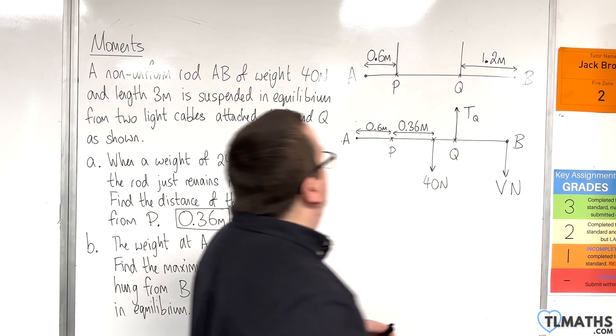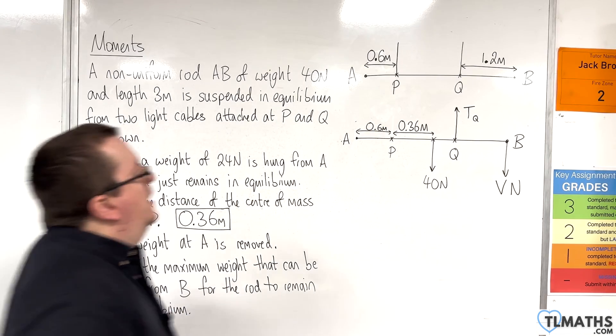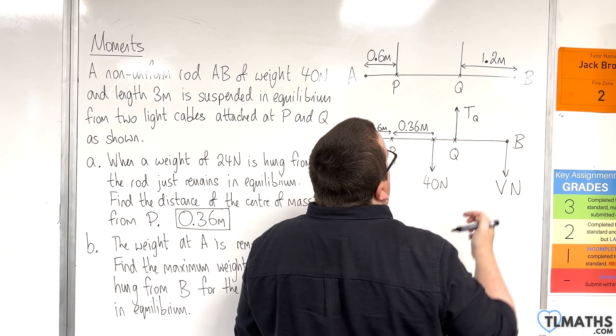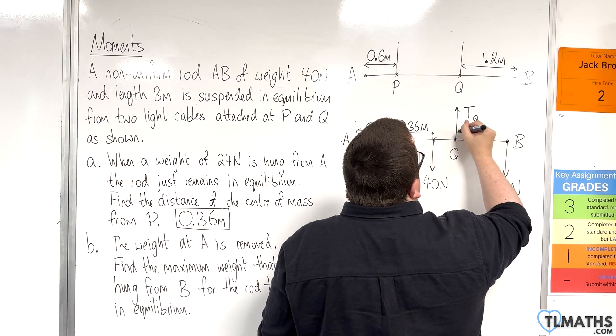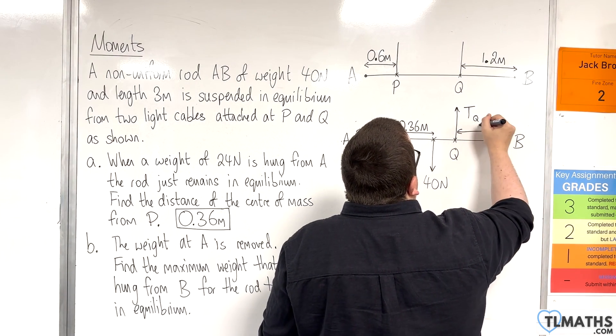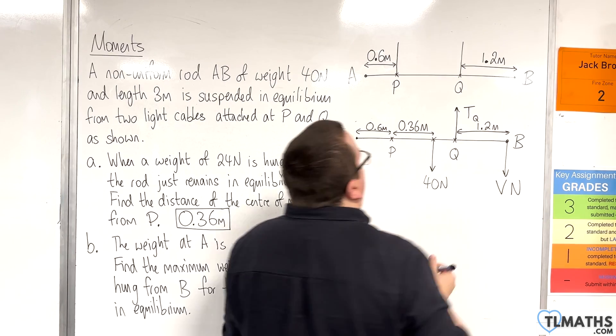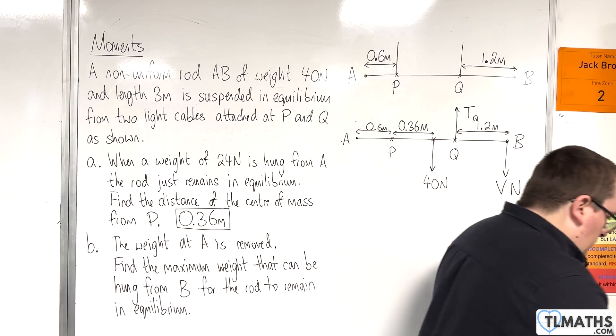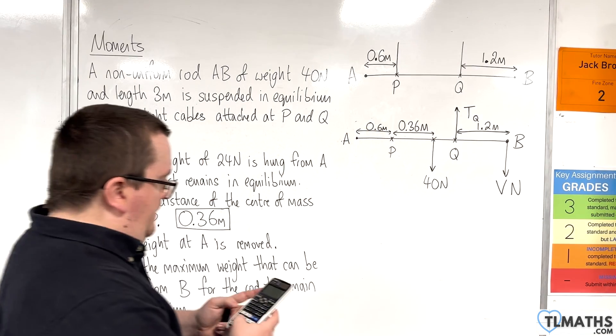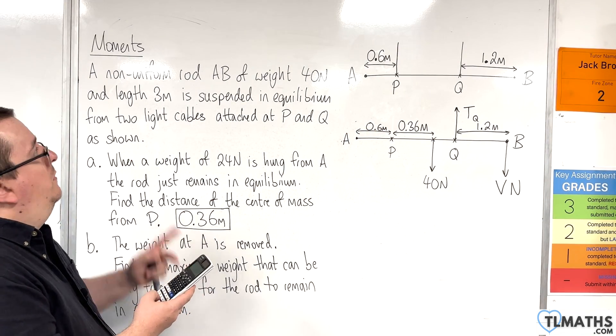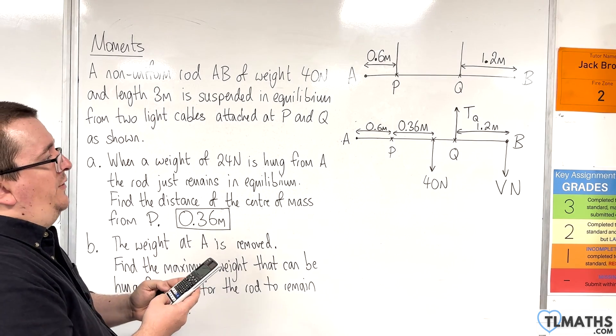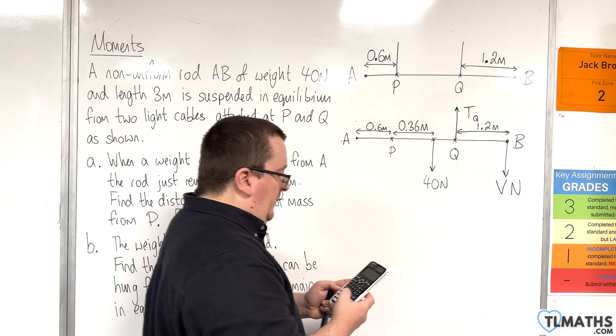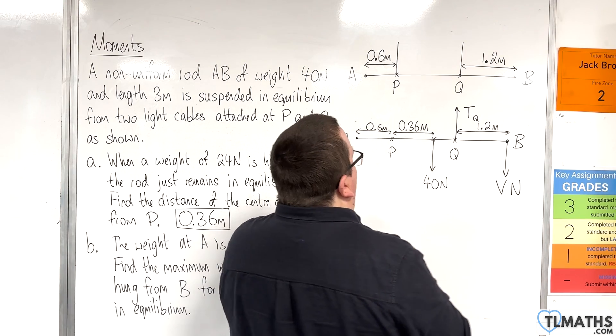Now, before I go any further, I'm not too keen on knowing that distance there. Let's add a little bit more to our diagram here. So this is 1.2 metres. Before we do any of the maths, that's 1.2 metres there. And we know, so if I can work out that distance there, that's 3 metres, because the whole thing's 3 metres. Take away 1.2, take away 0.36, take away 0.6, and that gives me 0.84 metres.